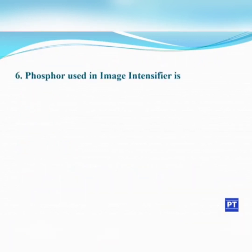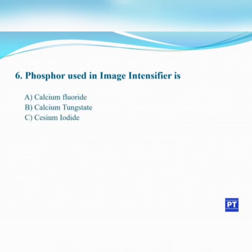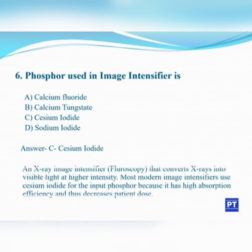Sixth question: the phosphor used in an image intensifier is? A. Calcium fluoride, B. Calcium tungstate, C. Cesium iodide, D. Sodium iodide. The answer is C, Cesium iodide.